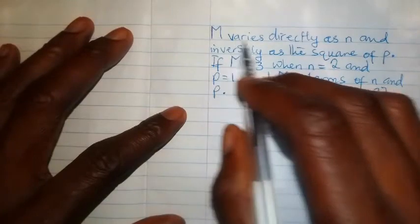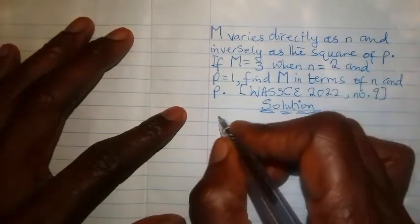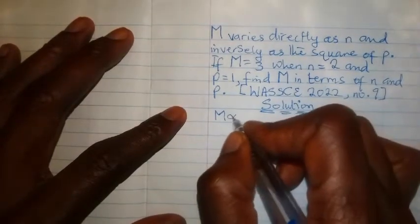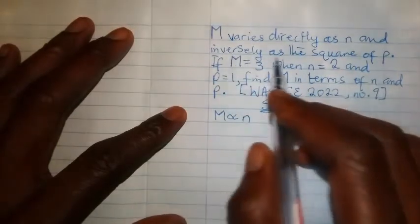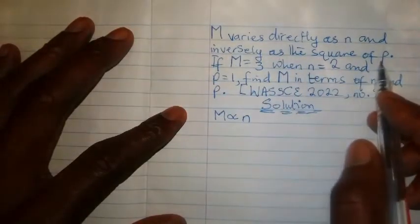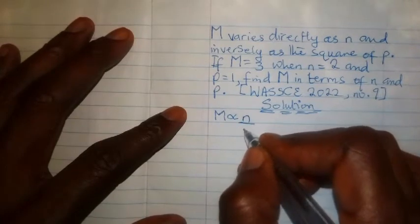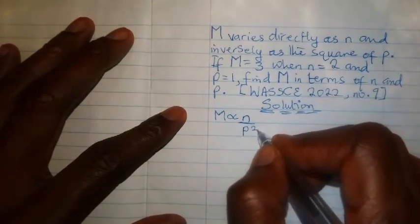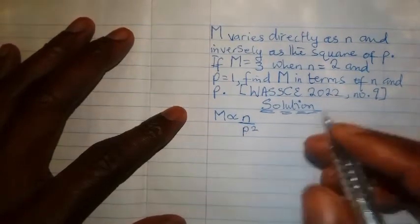m varies directly as n. How do we write that? We'll write it as m varies directly as n and inversely as the square of p. So since it's inversely, you come under n, draw a line, put your p and put your square there because it varies inversely as the square of p. Now the next